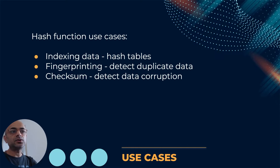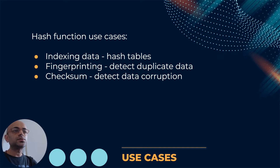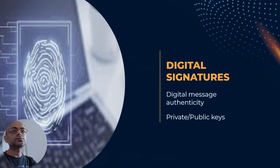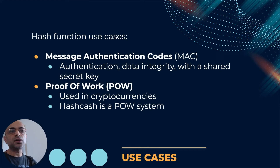Some use cases of hash functions include indexing data — normally you create hash tables while processing data in various algorithms — and fingerprinting to detect any duplicate data. In the case of checksums, you use hashing to detect data corruption. In digital signatures, you use it for the authenticity of a digital message using private and public keys. For message authentication codes (MAC), hashing supports authentication and data integrity using a shared secret key instead of public and private keys.